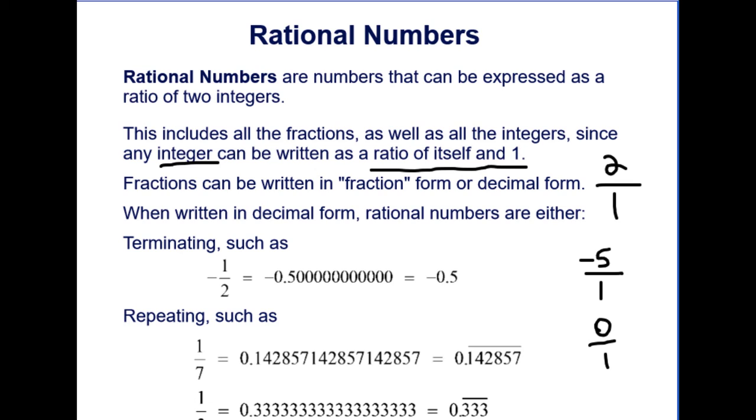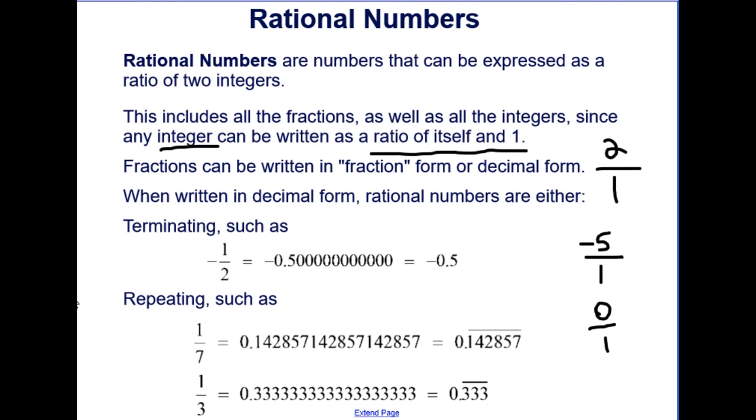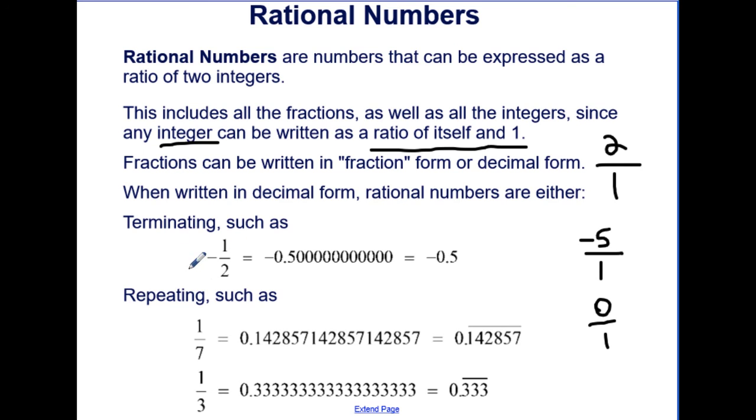Fractions can be written in fraction form or decimal form. And again, it's important to note that rational numbers, when in decimal form, they could be terminating, such as negative 1 half is the same as negative 0.5. And there technically are an infinite amount of zeros, but we don't count the zeros, so it's just negative 0.5.